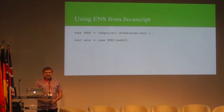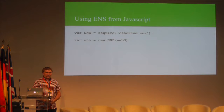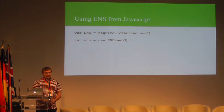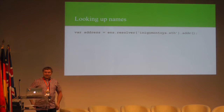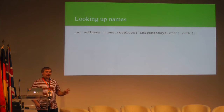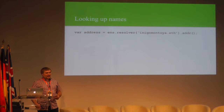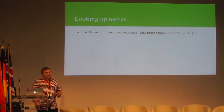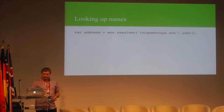Using ENS off-chain is equally simple. We have a JavaScript library available which simplifies all operations. You can simply require it from NPM, set it up by giving it a reference to your Web3 object, and looking up names is as simple as asking it first for the resolver and then for the address — the same two-step process described earlier. The ENS JavaScript library uses promises, so what's returned is a promise for the address, which makes for a simpler interface than dealing with callbacks.